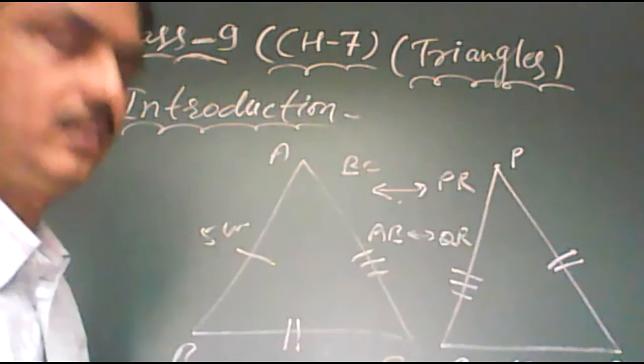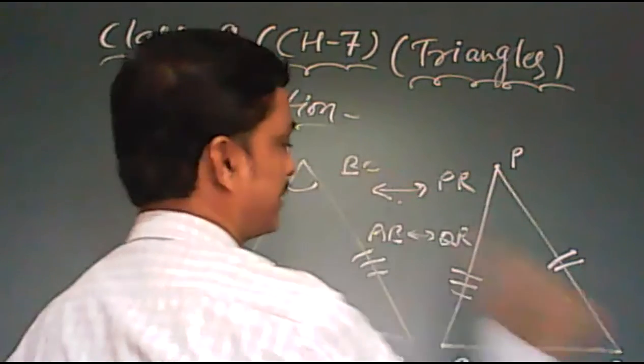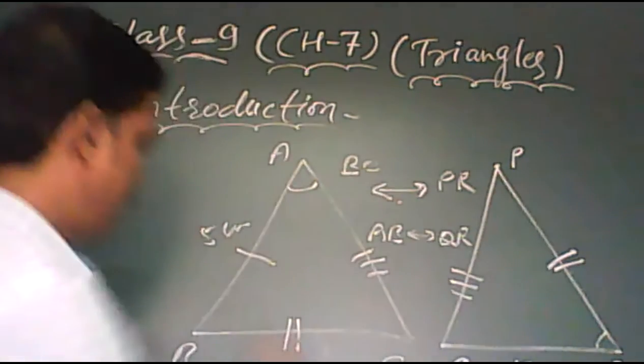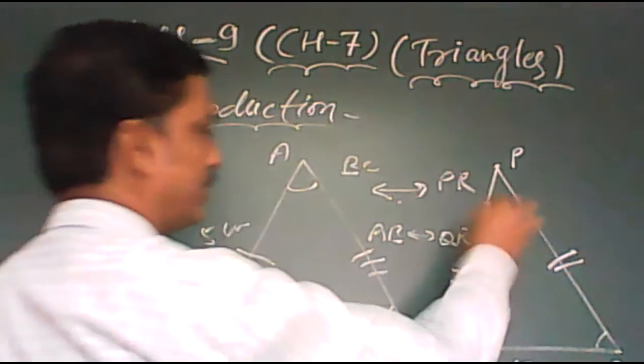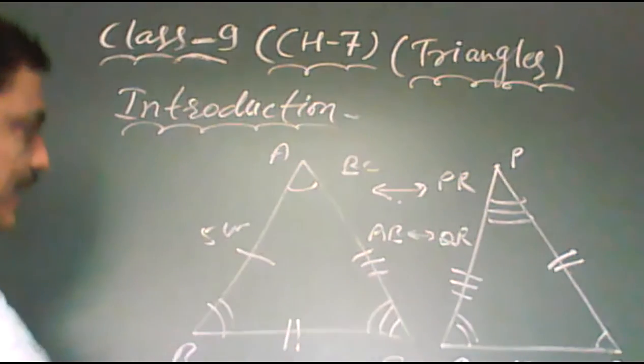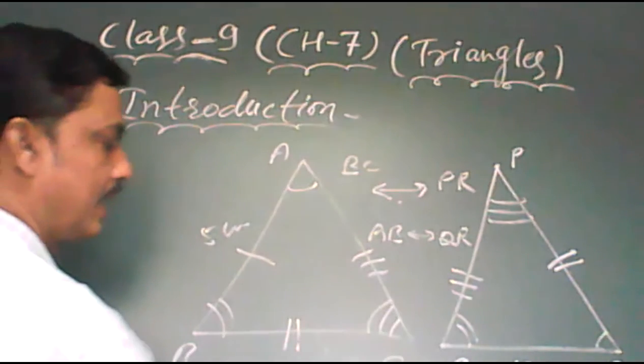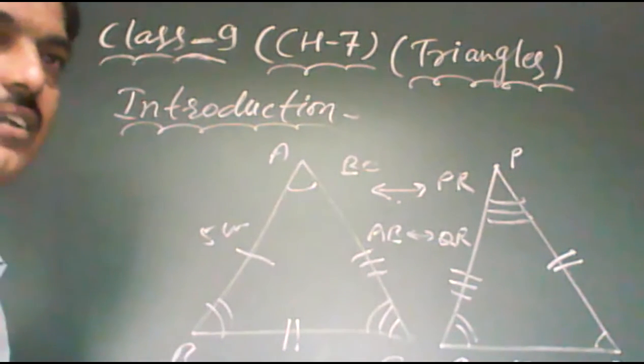Similarly, when we are talking about the angles, the congruence, if angle A is equal to R, angle B is corresponding to angle Q, and angle C is corresponding to angle P. Then we can write angle A is corresponding to angle R.